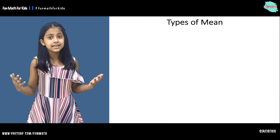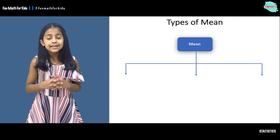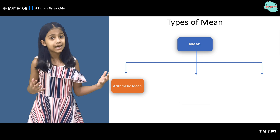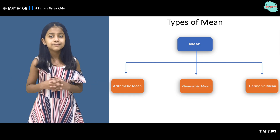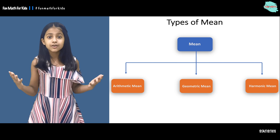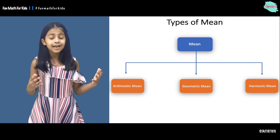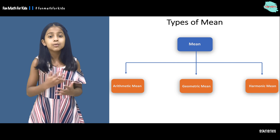Hi, welcome to Fun Math. Today we will talk about harmonic mean. Let's first see the different types of mean. There are three different types of mean: arithmetic mean, geometric mean, and harmonic mean. In the previous few videos we have already talked about arithmetic mean and geometric mean. Today we will talk about harmonic mean.